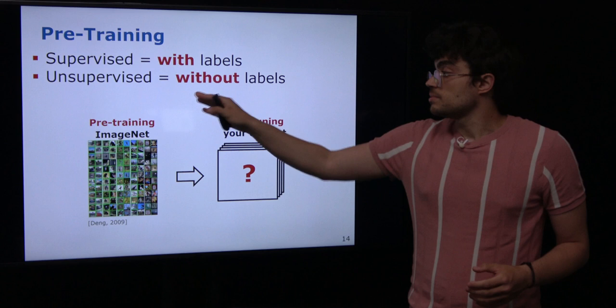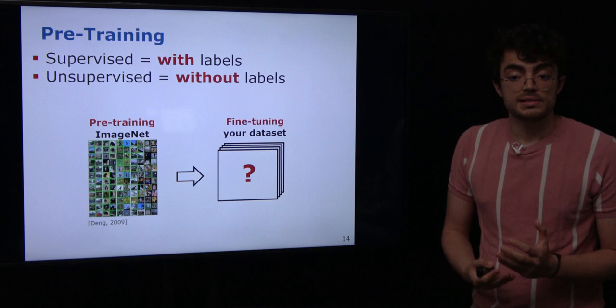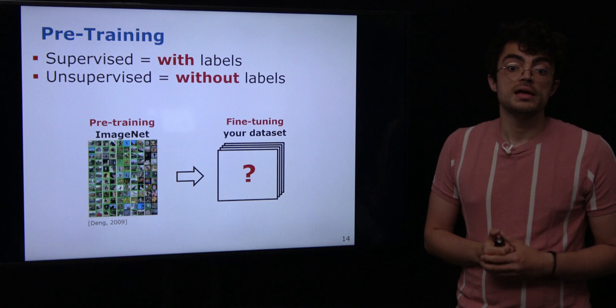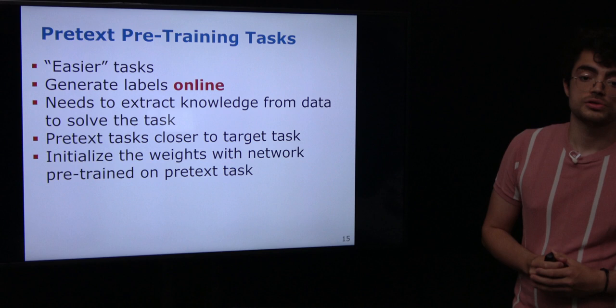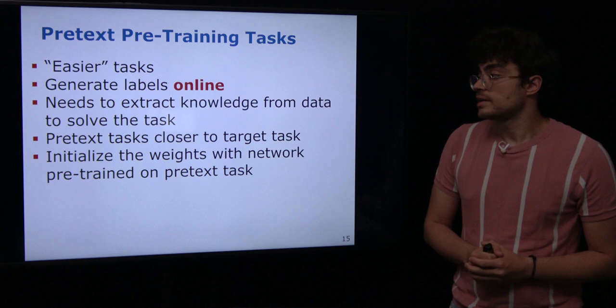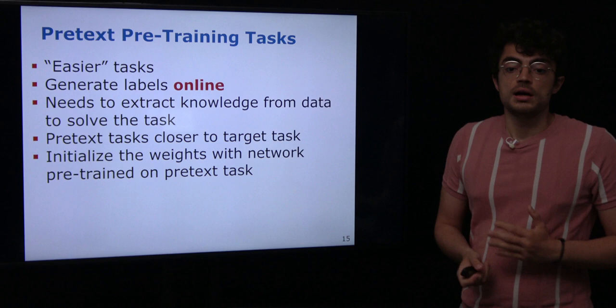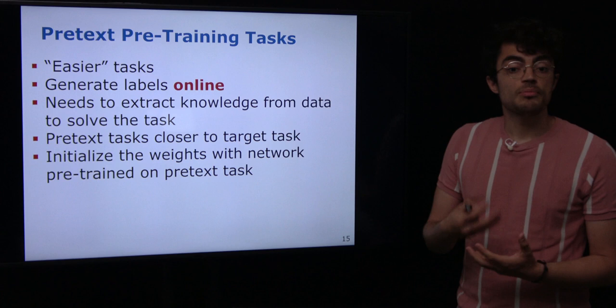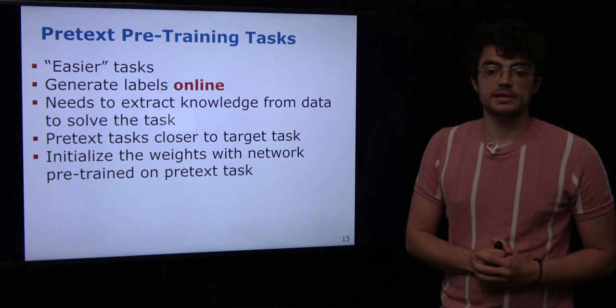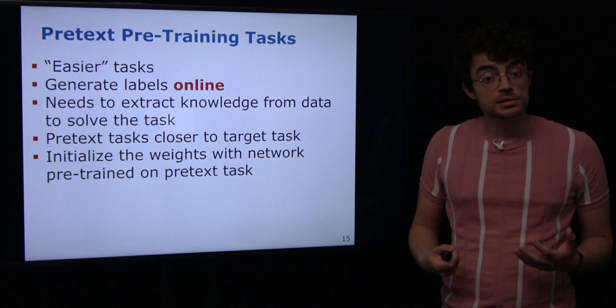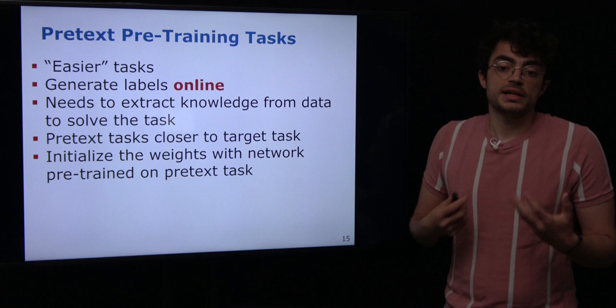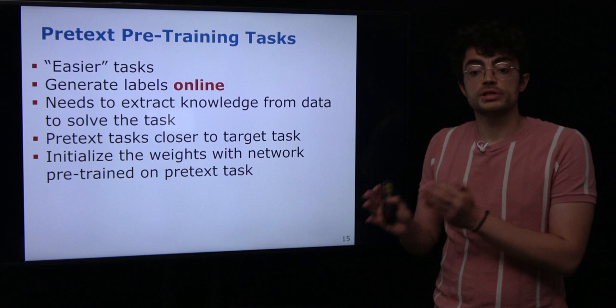Another way of doing pre-training is through unsupervised methods, where you don't have labels but define pretext tasks where you can generate labels online and pre-train your model without any manually labeled data. The idea of a pretext task is that you have an easier task with labels generated online during training. This pretext task needs to be meaningful enough to force the model to extract useful knowledge from the data. You can also think about your target task and define pretext tasks closer to it, such that the features learned are more suitable for fine-tuning.